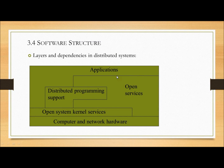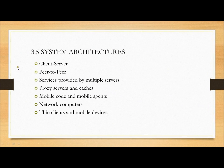Coming to distributed systems, we have applications and open services. The open services layer provides support for distributed programming from computer memory. The open system kernel services act as an operating system. The computer and network hardware acts as network hardware. Some system architectures include client-server architecture, peer-to-peer service provided by multiple servers, proxy servers and caches, mobile code and mobile agents, network computers, thin clients, and mobile devices.